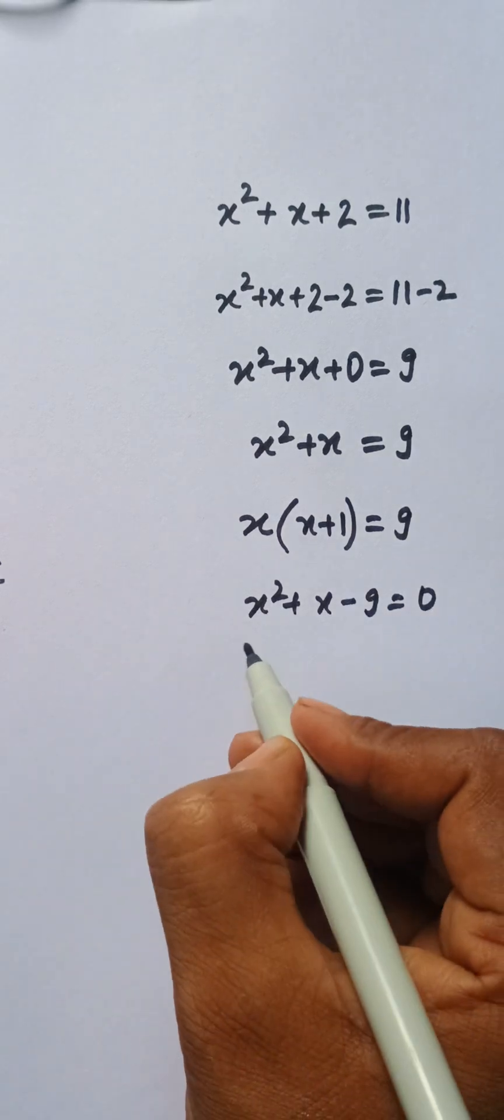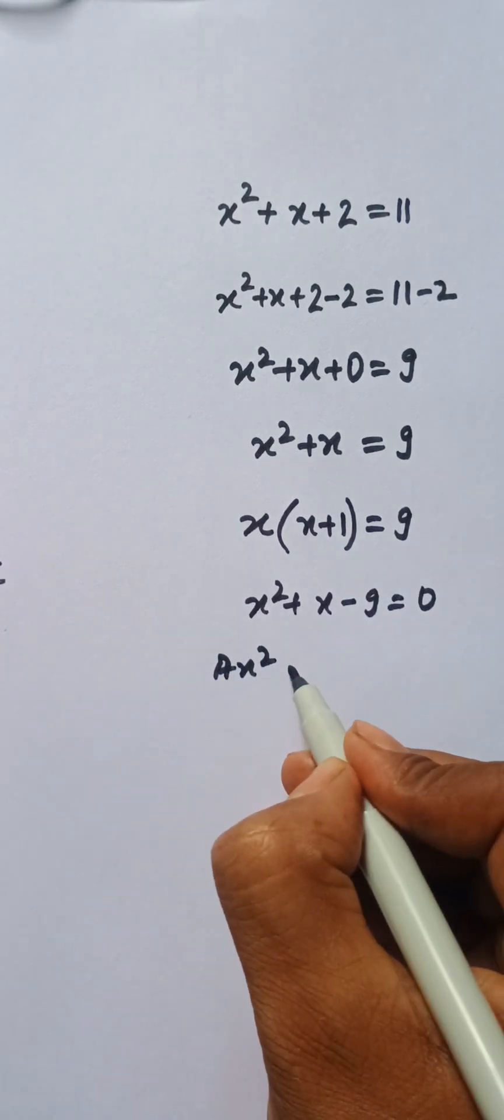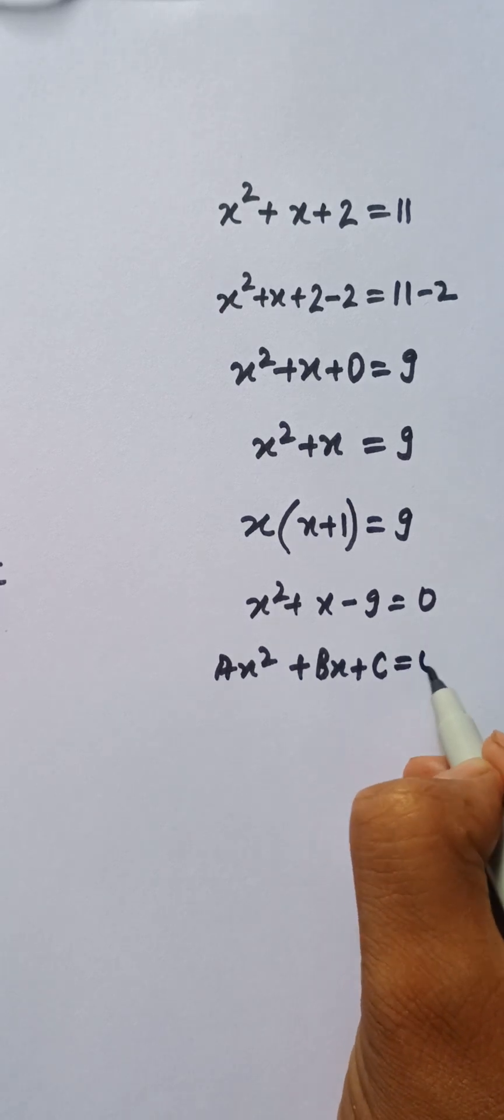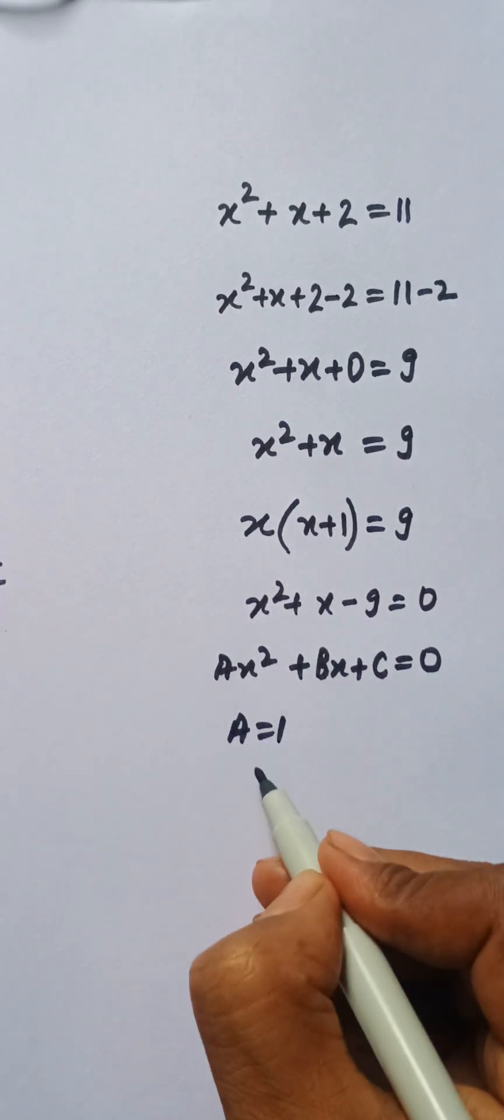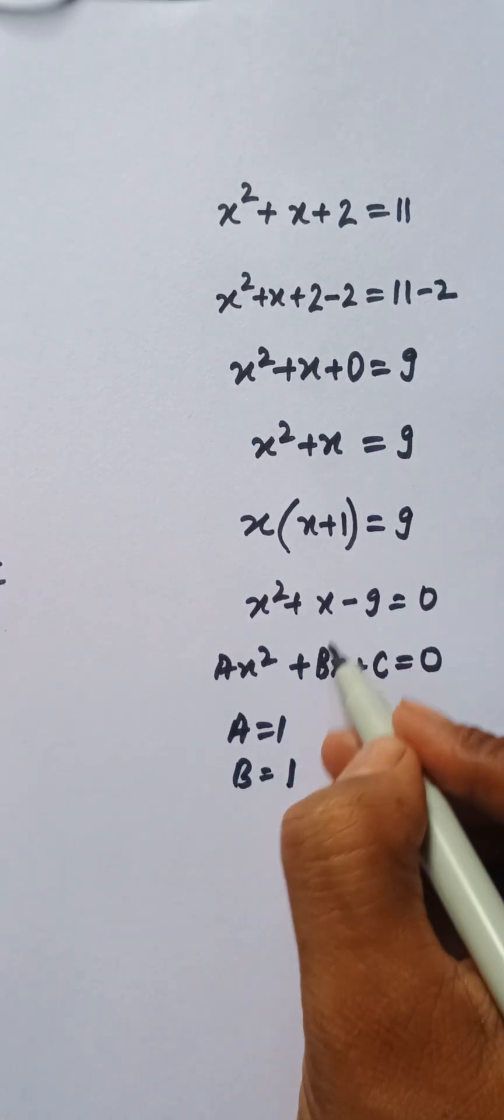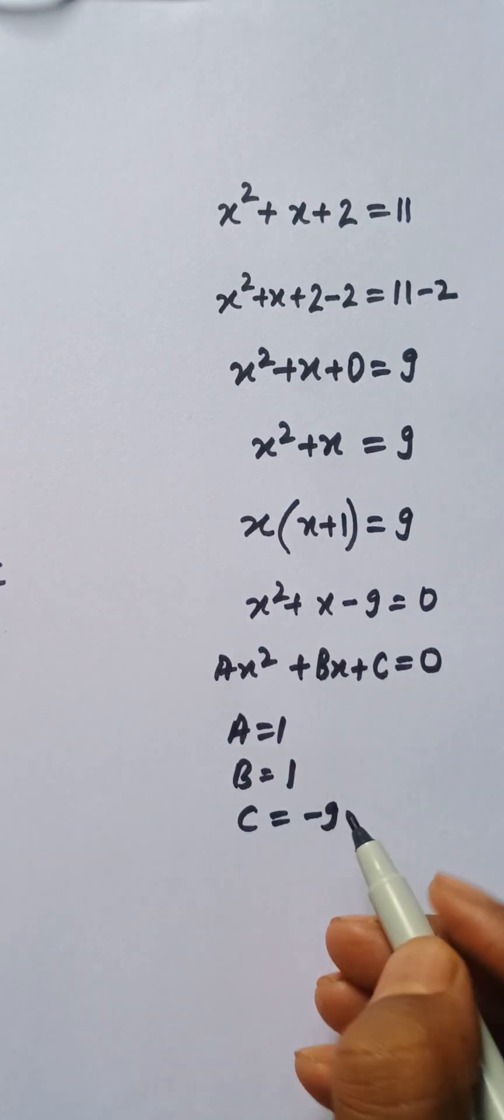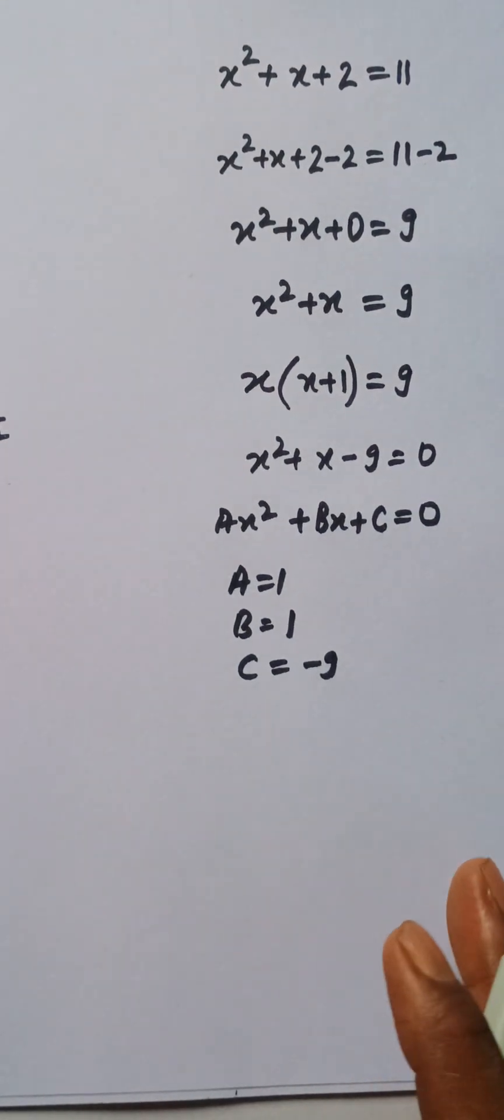I can compare this one: ax squared plus bx plus c equals 0. We have a equals 1 and b equals 1, and c we have minus 9. I need to get the value for x.